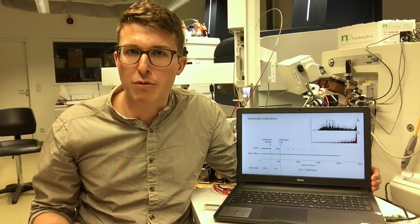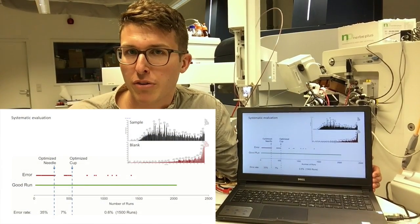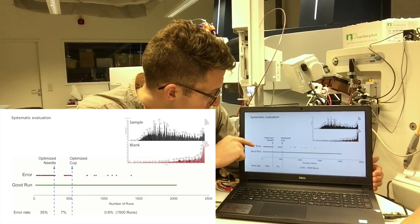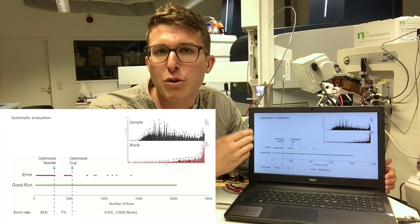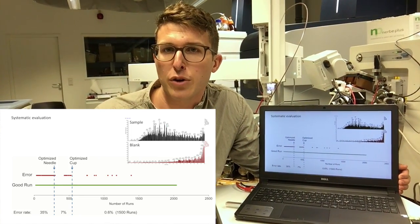And now we start with more systematic evaluation of the IWASF prototype. So what we did was we were running now almost 2,000 kilo runs. And as you can see in the beginning we found some errors, but together with Nikolaj and Ole we could fix them. And for the last 1,500 runs the error rate dropped down to 0.6%.